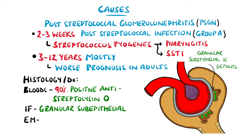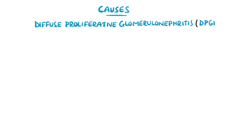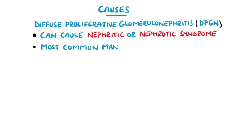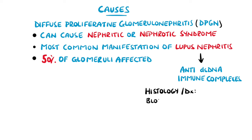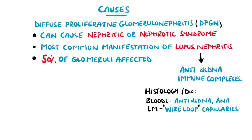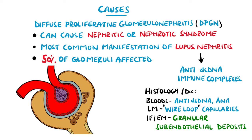Diffuse proliferative glomerulonephritis can cause both nephrotic and nephritic syndrome and is the most common manifestation of lupus nephritis. The exact mechanism is not entirely understood but is thought to be linked to deposition of anti-double-stranded DNA complexes. It typically has over 50% of glomeruli affected. Blood tests can show positivity for autoantibodies such as double-stranded DNA and anti-nuclear antibodies, and on light microscopy there can be thickening of the capillary wall giving a wire loop appearance. On immunofluorescence and electron microscopy there are sub-endothelial granular deposits.